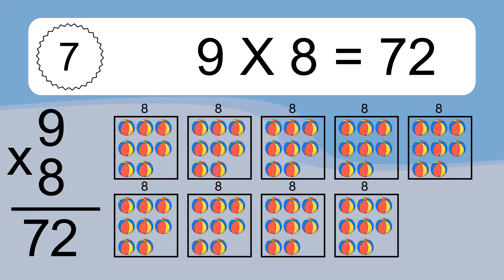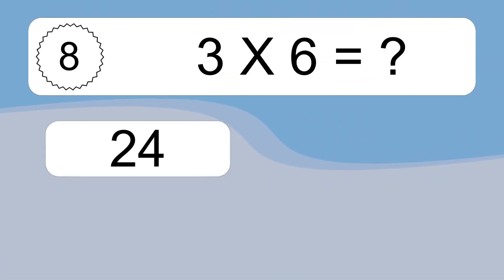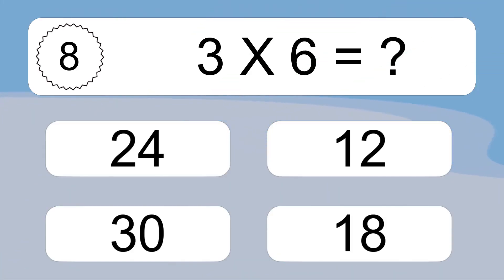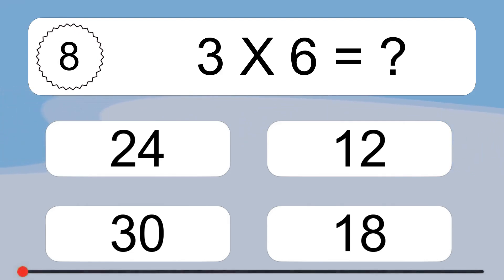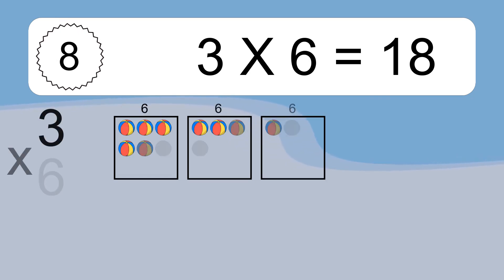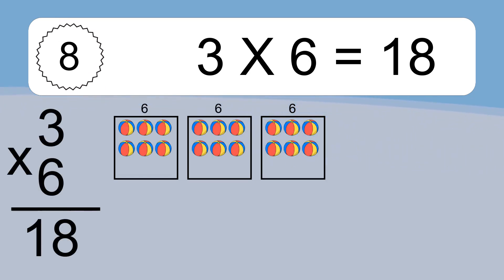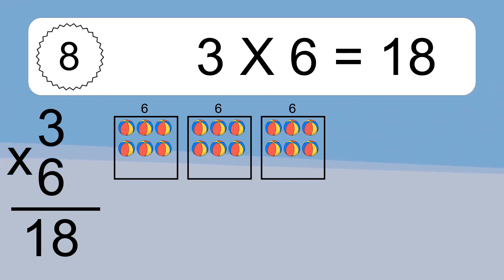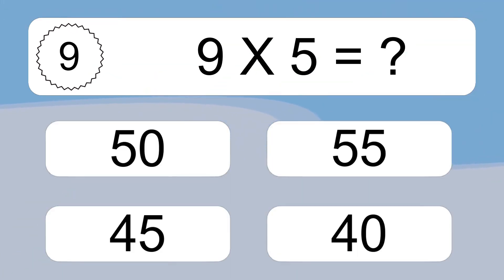This equals seventy-two balls. Three times six equals what? Three times six equals eighteen. We have three boxes, and each box has six colorful balls inside. If you count all the balls in all the boxes together, you will have three times six balls. This equals eighteen balls.